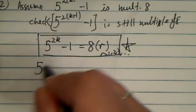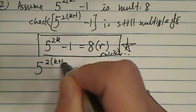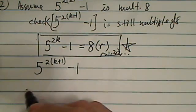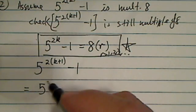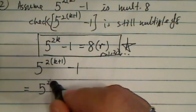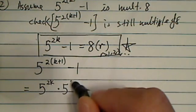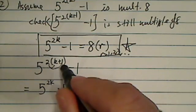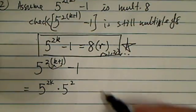Now let's check what happens to 5 to the 2k plus 1. So let's open this one up. You're going to have 5 to the 2k times 5 to the 2, because all I did is open this one up, and then I still have a minus 1 over here.